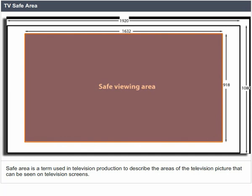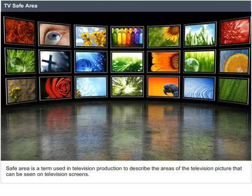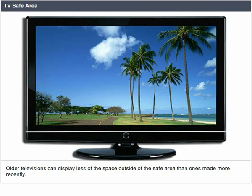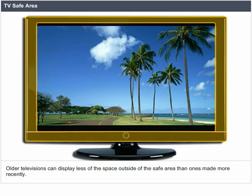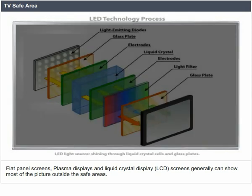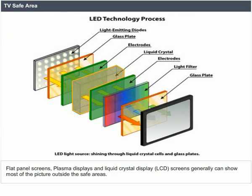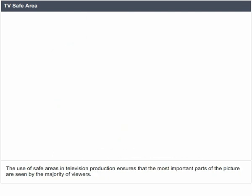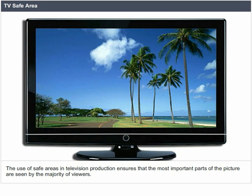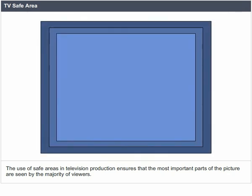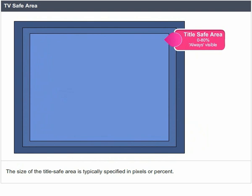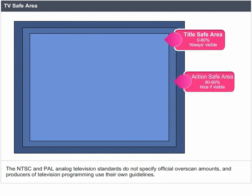TV safe area. Safe area is a term used in television production to describe the areas of the television picture that can be seen on television screens. Older televisions display less of the space outside the safe area than more recently made ones. Flat panel screens — plasma displays and LCD screens — can generally show most of the picture outside the safe areas. The use of safe areas ensures that the most important parts of the picture are seen by the majority of viewers. The NTSC and PAL analog television standards do not specify official overscan amounts, and producers use their own guidelines.